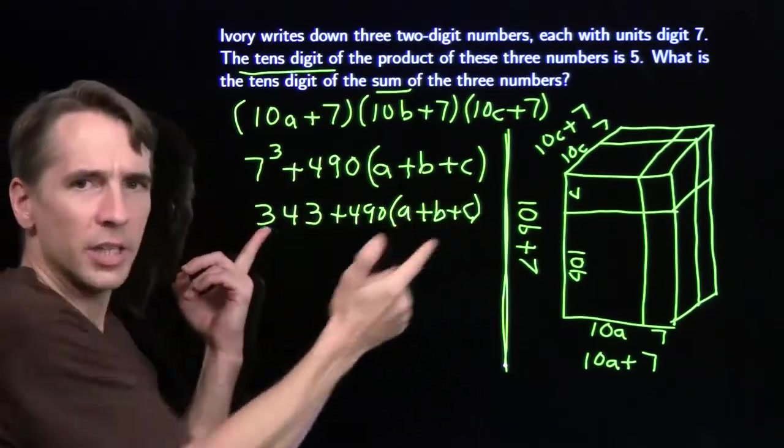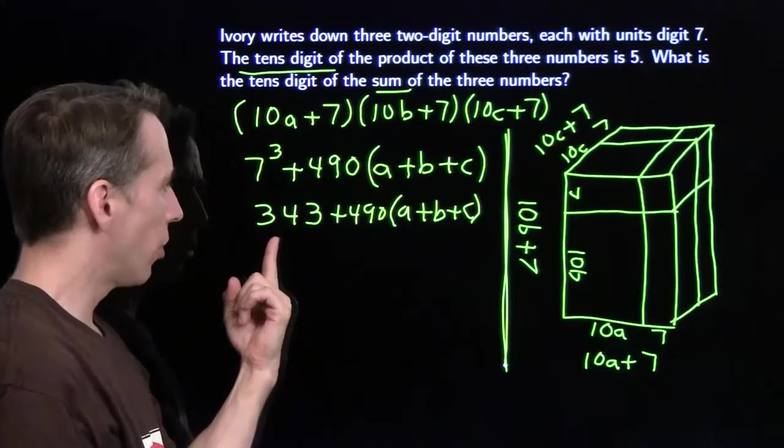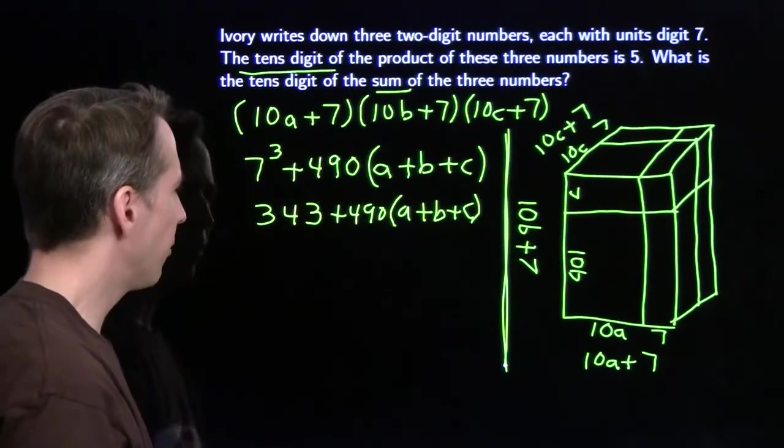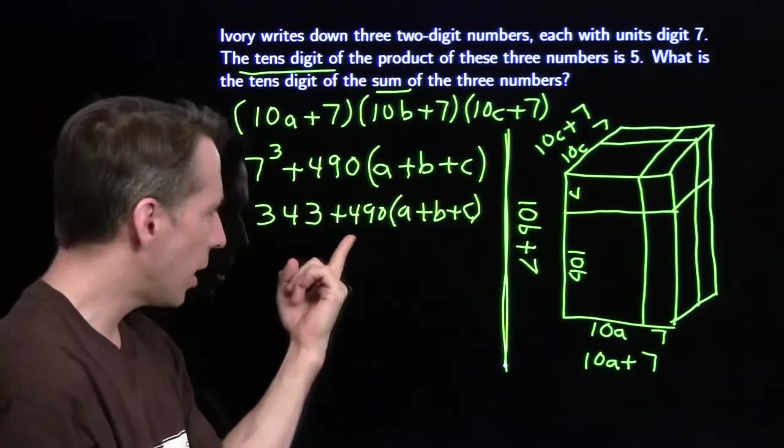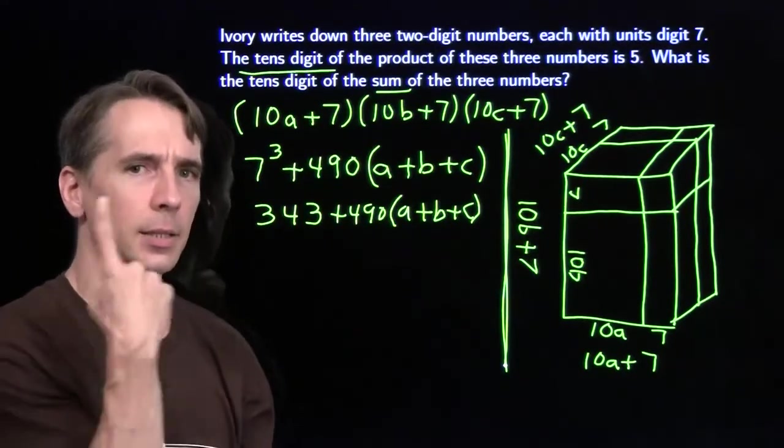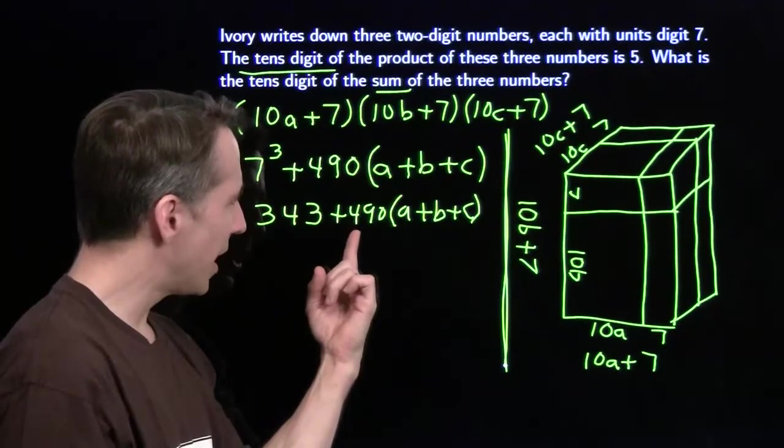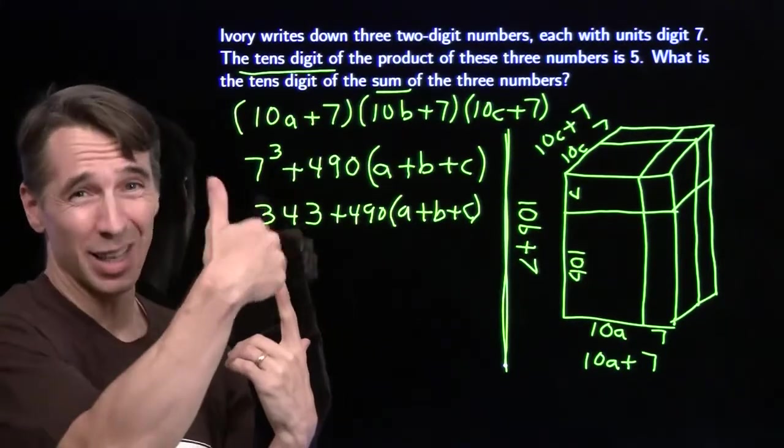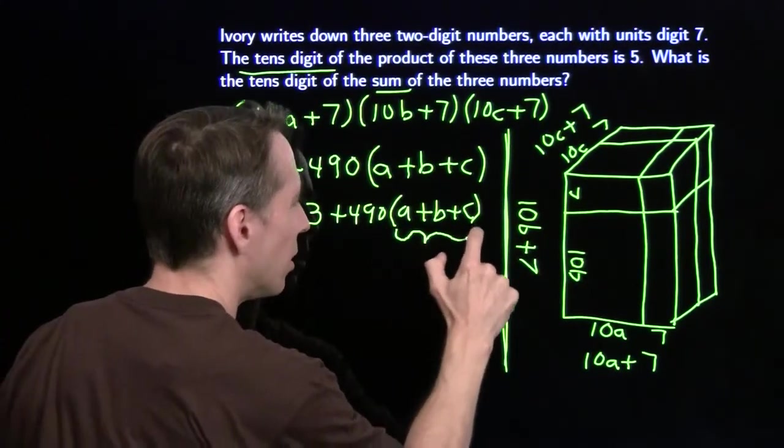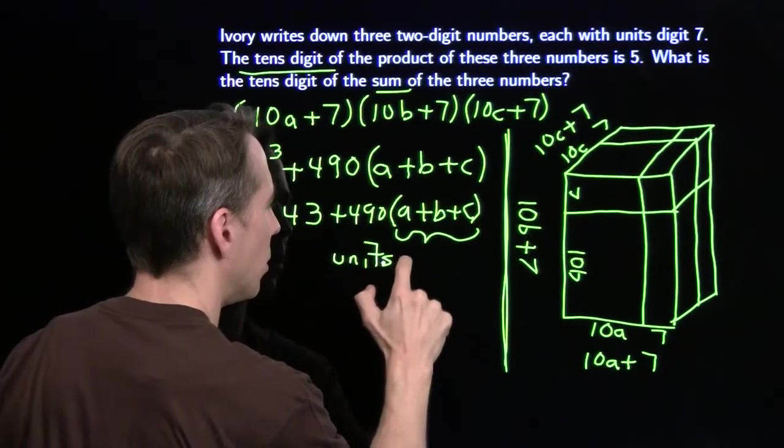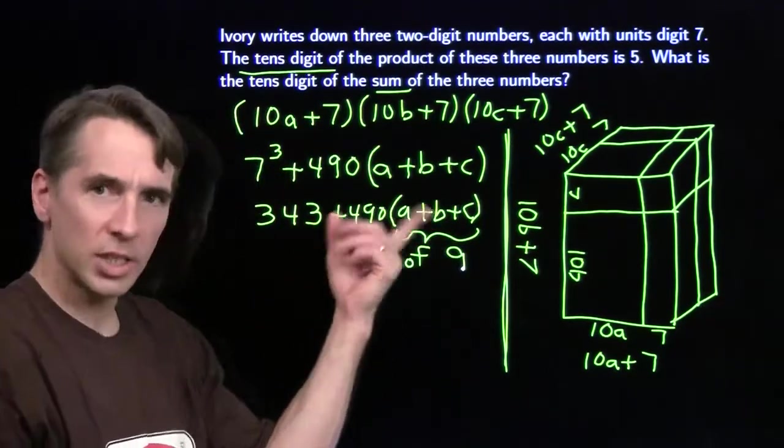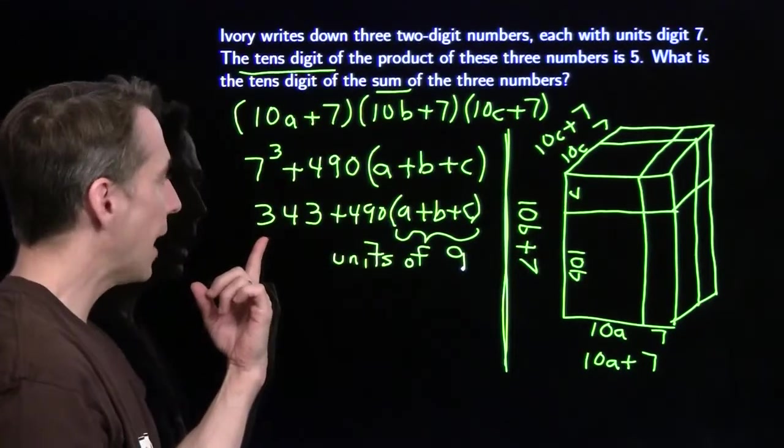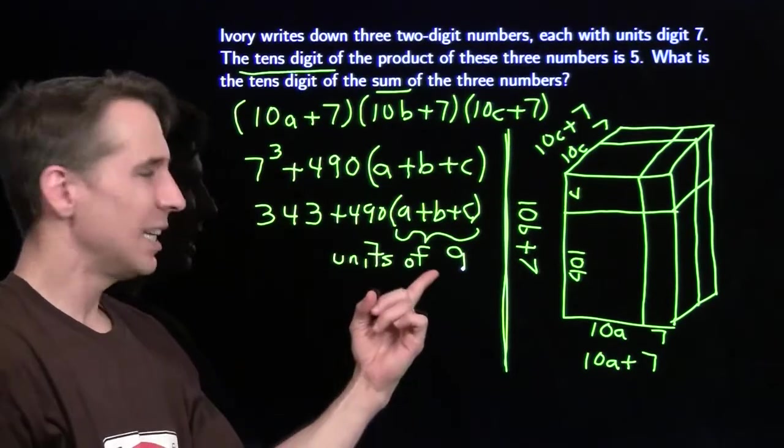All right, now I know the tens digit of this has to be 5. I've got a 4 over there, I need to add something in here that's going to make the tens digit go up to 5. I know the units digit over here is going to be zero, so all I have to do is focus on the tens digit there. I need the tens digit to be 1, so I can get from 4 up to 5. So I need to multiply that 9 by something over here that's going to get me a 1. The only thing I can multiply a 9 by that's going to get me a 1 over there, this right here has to have a units digit of 9. This has a units digit of 9, then the tens digit of this product is going to be 1. And that's what I need in order to add to 4 to get to 5. So I know that the units digit of this sum is 9.